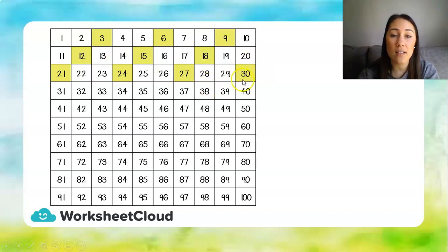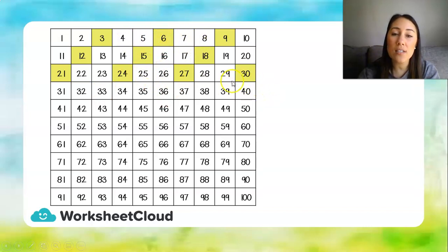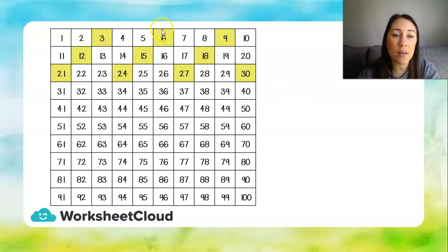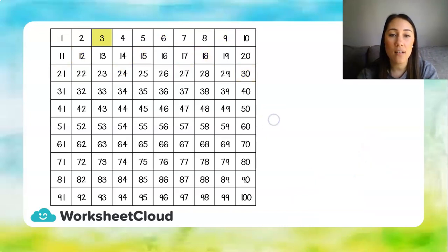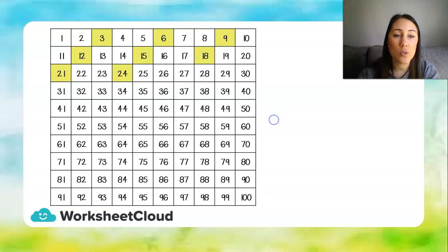The pattern repeats again from thirty to thirty-three, thirty-six, and you'll see the numbers end on the same digits as the first group of the pattern. These numbers, when we count in threes, are called multiples. Let's try that again: three, six, nine, twelve, fifteen, eighteen, twenty-one, twenty-four, twenty-seven, and thirty. Well done.